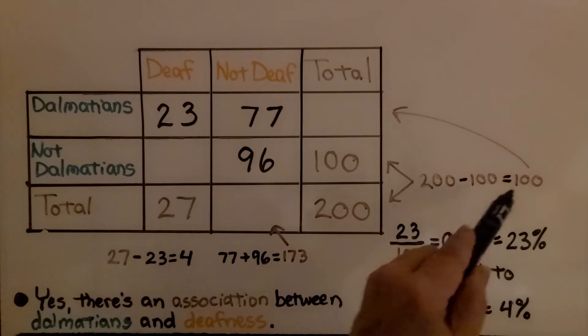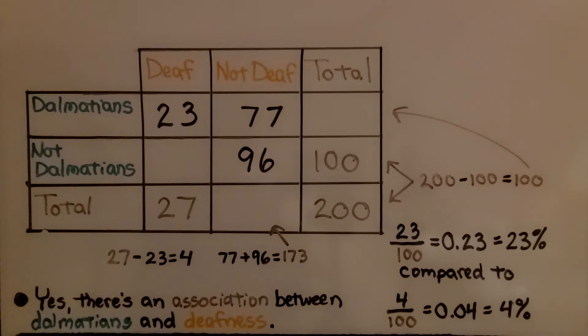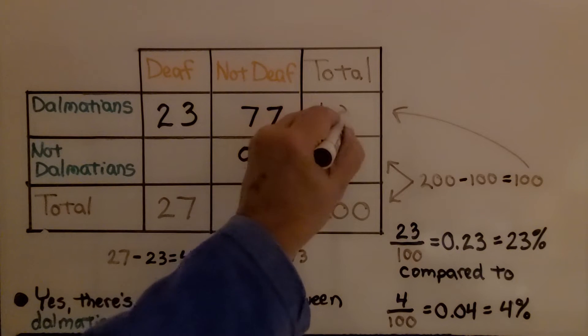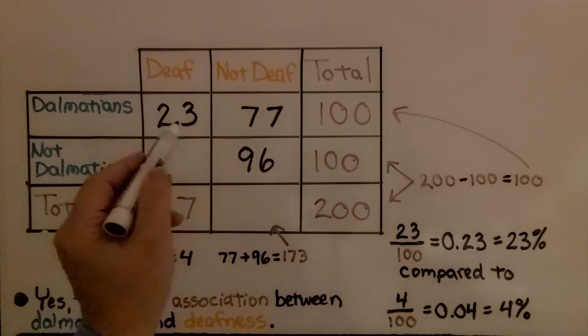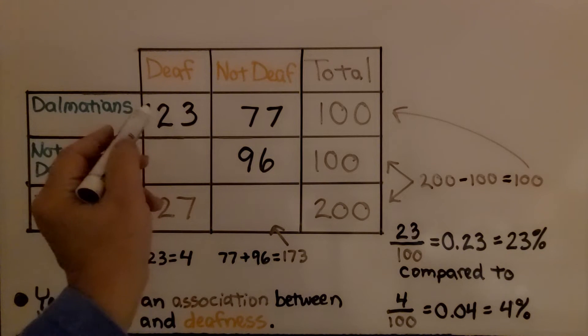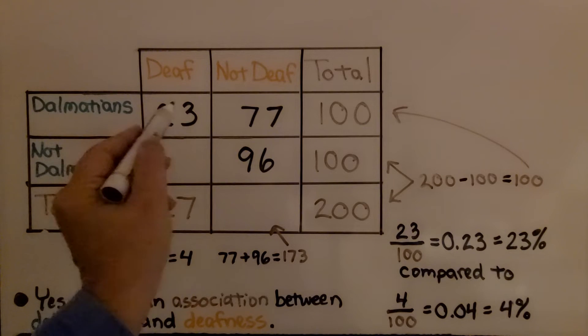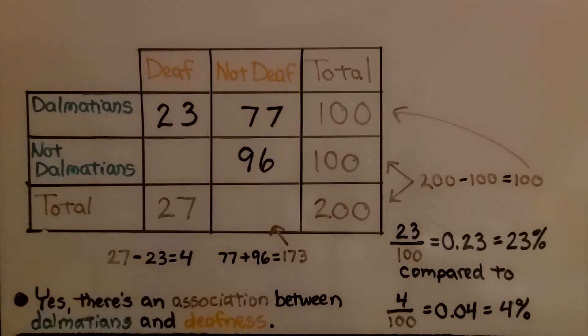Another way we could have filled in this cell is by adding the number of Dalmatians that were deaf and not deaf, 23 plus 77, is 100. That's 23 out of 100, which is 23%.